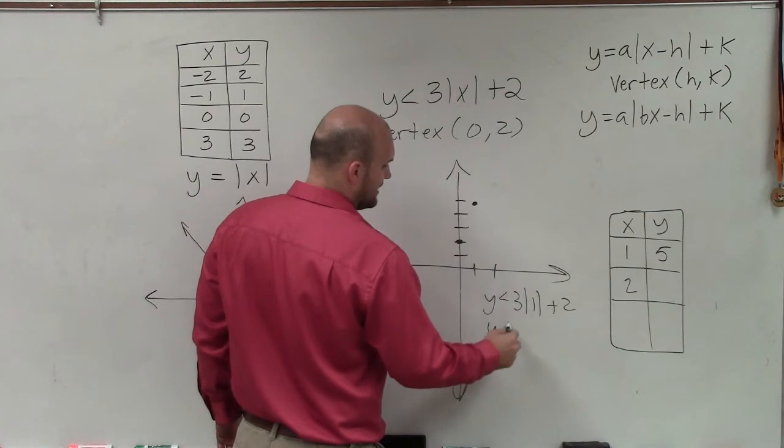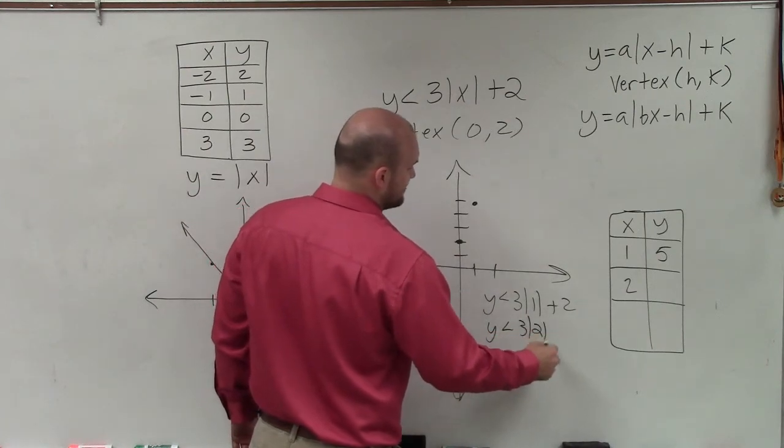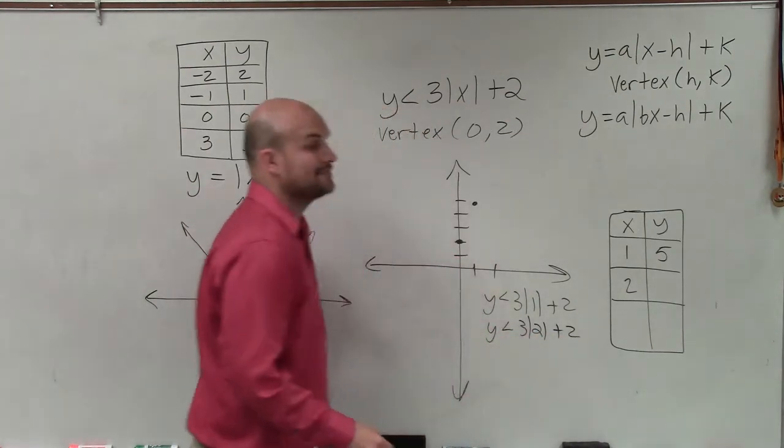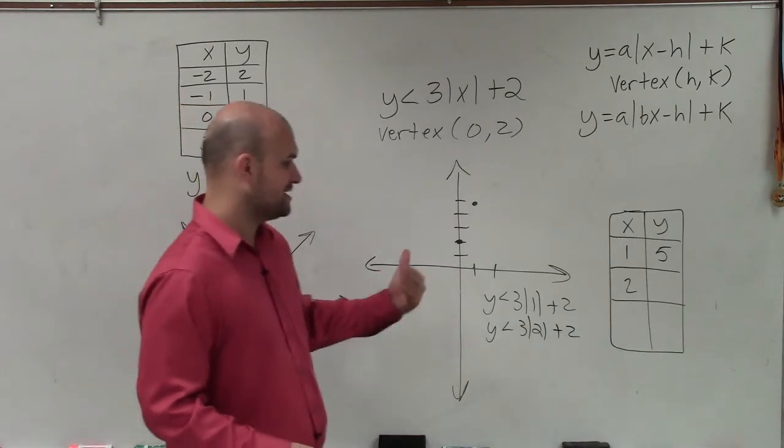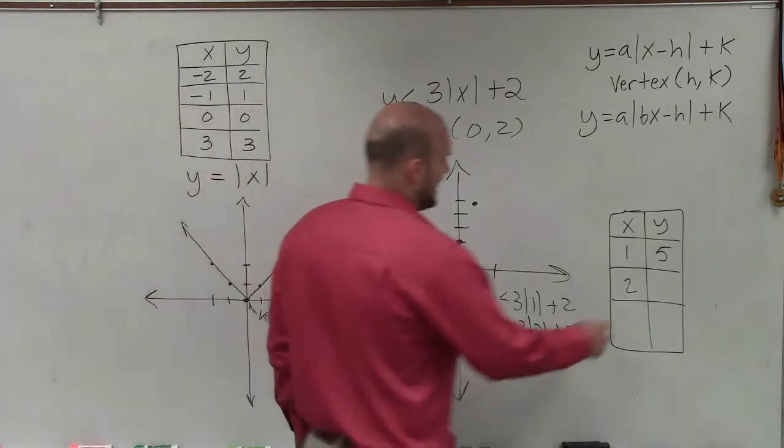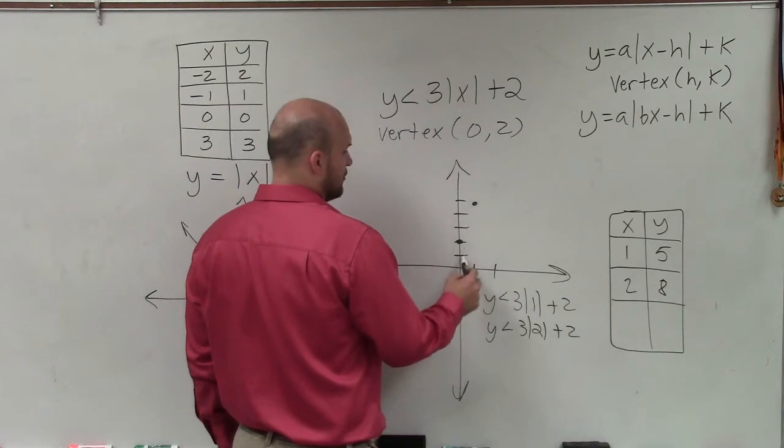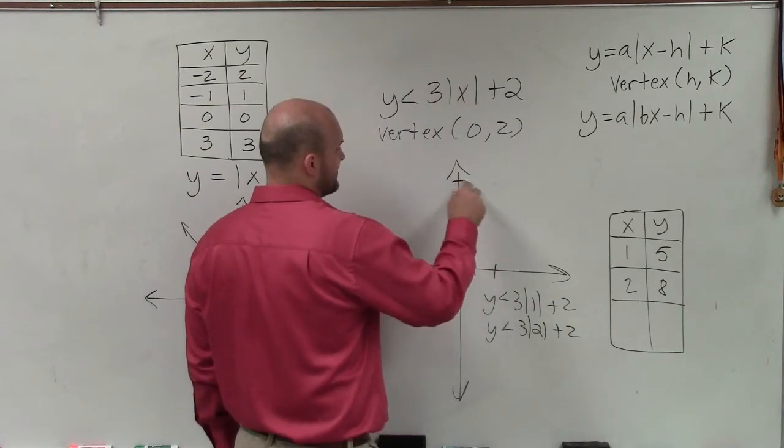Then let's do two. y is less than three times the absolute value of two plus two. Absolute value of two is two. Two times three is six. Six plus two is eight. So I go over two, now up eight.